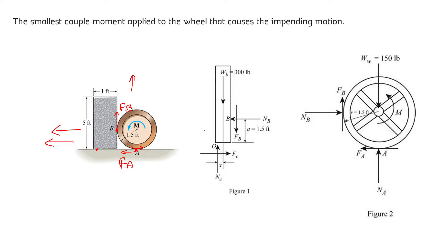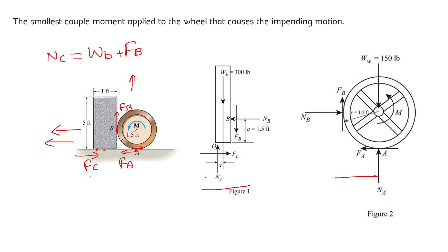We can write the normal reaction on the concrete by the ground, Nc, as the weight of the concrete plus the friction force which is acting in the downward direction at point B on the concrete. We will take the moment about point O equal to zero, and we will also consider the condition along the horizontal (x) direction on the concrete — equating friction force Fc with the normal reaction Nb that the disk applies on the concrete.